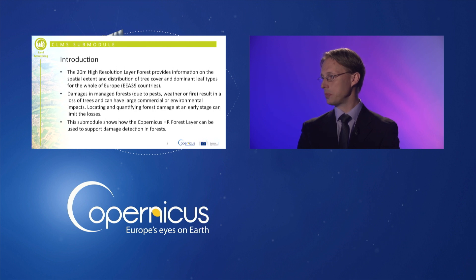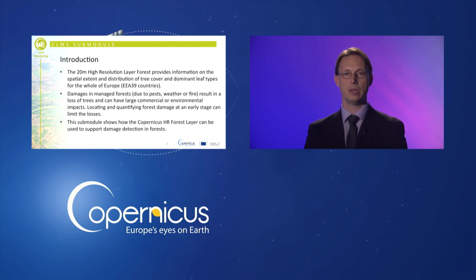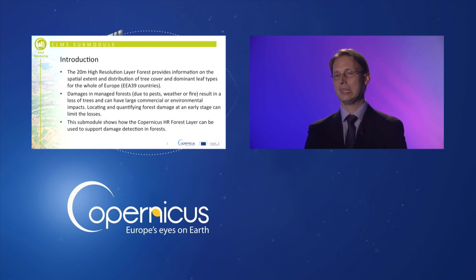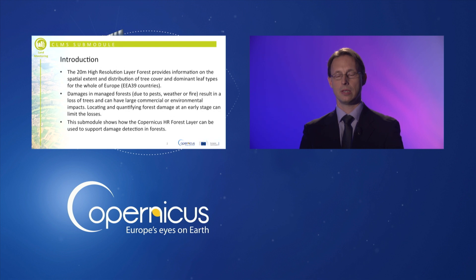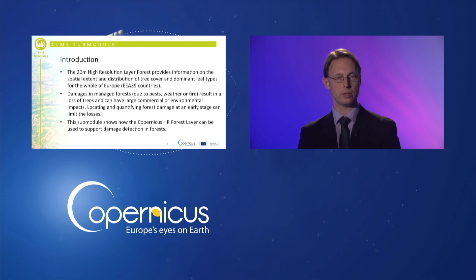It helps in assessing damages in forests that occur for many reasons — both natural and human-induced — including pests, fires, bark beetle, snow and ice damage, storms, and flooding. Assessing these damages rapidly and thoroughly is a challenge, and it is an asset if local administrations and governments can do that quickly to quantify damage at an early stage and limit losses of wood and related financial value.